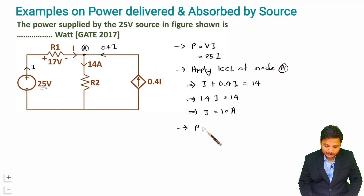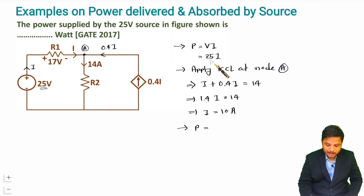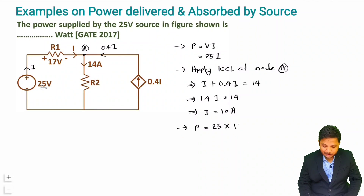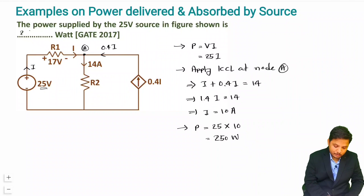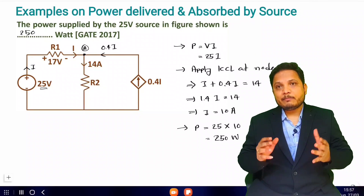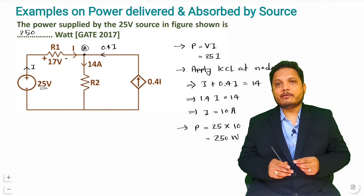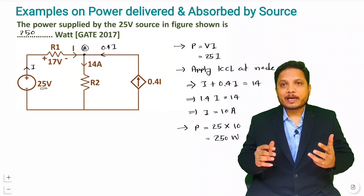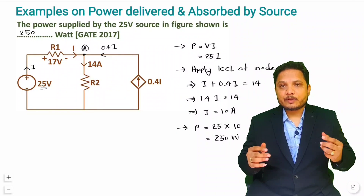So the power supplied by the 25 voltage source is 25 into I, which is 25 into 10, giving 250 watts. Our answer is 250 watts. That is how simply we can find values of power supplied or power absorbed.